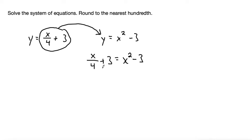I'm going to subtract x over 4 on both sides and subtract 3 on both sides. Both of these terms cancel out and it gives me 0 is equal to x squared minus x over 4 and then minus 3 and minus 3 goes to minus 6.